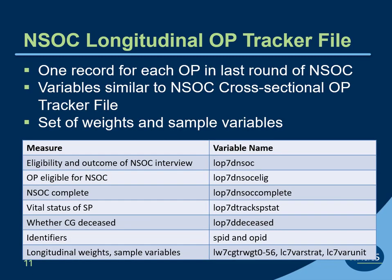The longitudinal NSOC OP tracker file identifies caregivers in the previous round of NSOC who are eligible for follow-up. The variables on the file are similar to those on the NSOC cross-sectional OP tracker file. The file includes a variable that combines information about eligibility for NSOC and the outcome of the interview, and several additional variables summarizing the OP's eligibility, outcome for NSOC, whether the SP was living or deceased, and two identifiers, the SP ID and the OP ID.